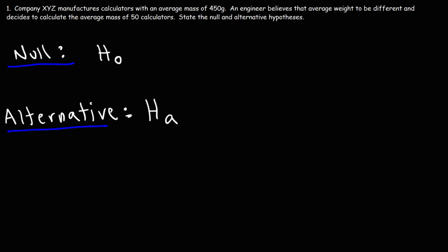Now let's talk about how we can state it. The first thing you want to determine is if you're dealing with a mean or proportion. Here we have a keyword: average mass. So we're dealing with the mean, represented by the symbol mu.